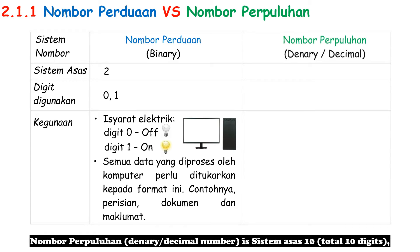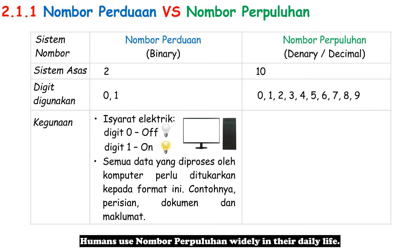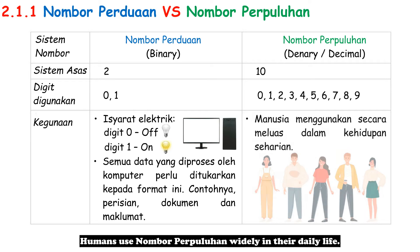Nombor Perpuluhan — decimal number — is Sistem Asas Sepuluh, which uses digits zero to nine. Humans use Nombor Perpuluhan widely in their daily life.